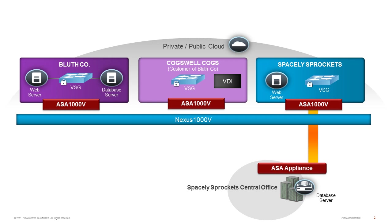Each tenant uses the cloud for something different. On the left, Bluthco uses their cloud to provide software as a service, so they host web and database servers in the cloud. Cogswell Cogs uses the cloud for virtual desktops and provides thin clients to their employees. And on the right, Spacely Sprockets uses the cloud for software as a service, but they only host their web servers in the cloud. They like to keep their database servers in the data center at their central office in the physical environment.